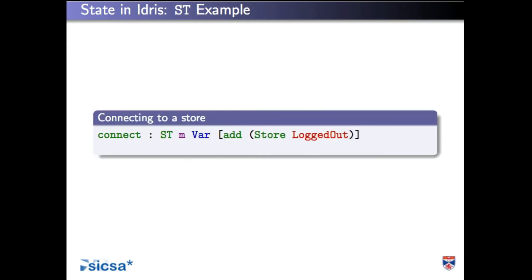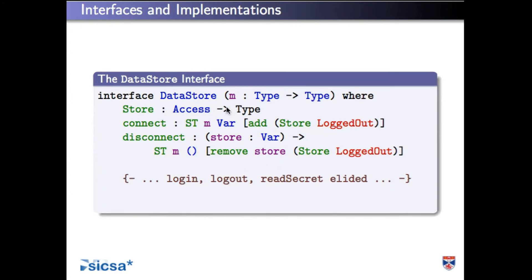We'll need to be able to connect to a store. Connecting will return a variable — that's what we'll use to refer to the store later on — and will add a store that is initially in the logged-out state. The 'add' function says: whatever we're adding, this is the state it's in. We also need to disconnect. All of this goes inside a data store interface, which includes the definition of the store type. The store has a current access mode — either logged in or logged out — and when we come to implement the store, that will be implemented by some concrete type: a network handle, a file handle, whatever. It's completely abstract here.